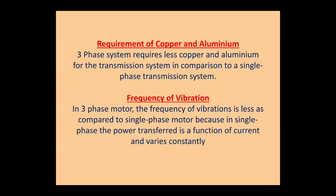In terms of frequency of vibration, three-phase motors have less vibration compared to single-phase motors. In a single-phase motor, power equals V × I × cos φ, so any variation in current directly varies the power. In a three-phase motor, power depends on line current as √3 × VL × IL × cos φ, and the effect of current variation is lesser, resulting in smoother operation.